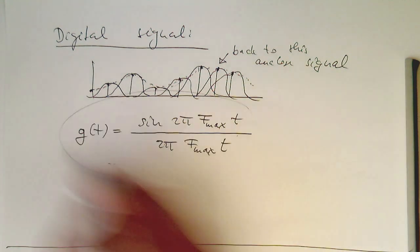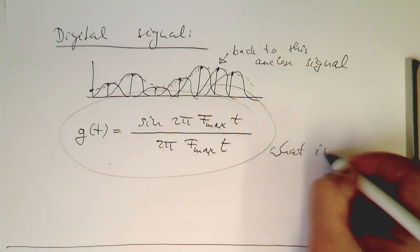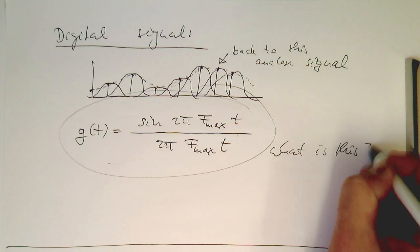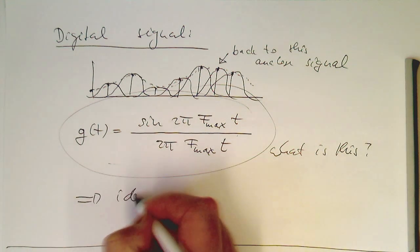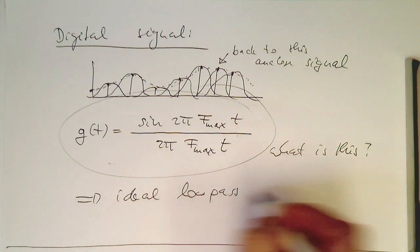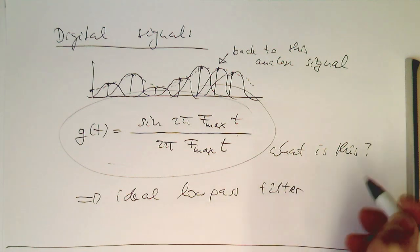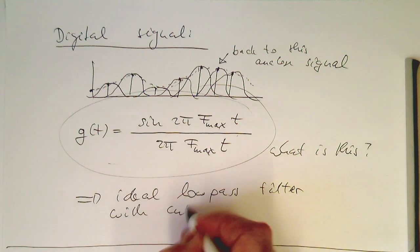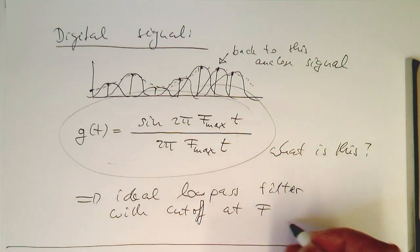And the question is, so what is this here actually? And this is essentially an ideal low pass filter. This is an ideal low pass filter with cutoff at f max.